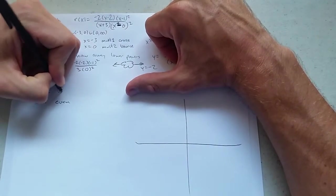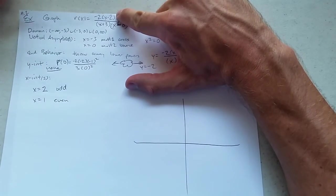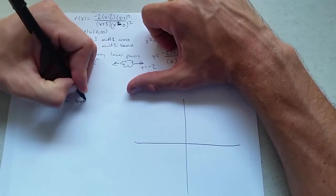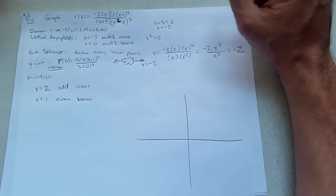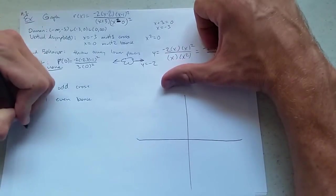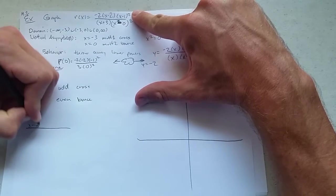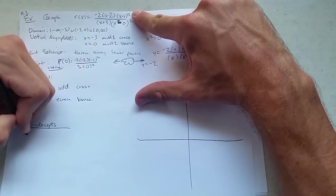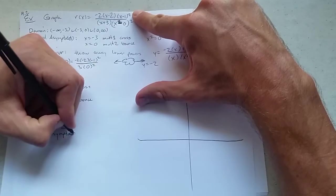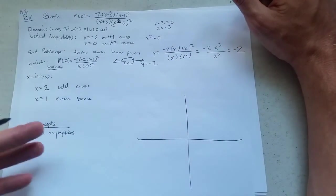This is even, odd. I'm looking at powers. Not the number 2, but the exponent is odd. So we get cross. Even, bounce. So we get cross and bounce. The best way to think about where do vertical asymptotes versus x-intercepts come from? Your x-intercepts are on the top and your vertical asymptotes are on the bottom. So this is a good way to remember this. x-intercepts on the top, vertical asymptotes on the bottom.